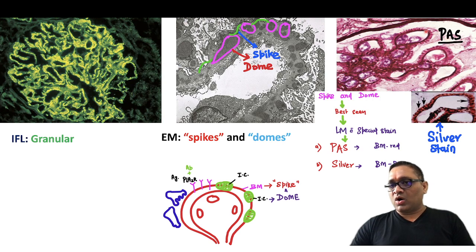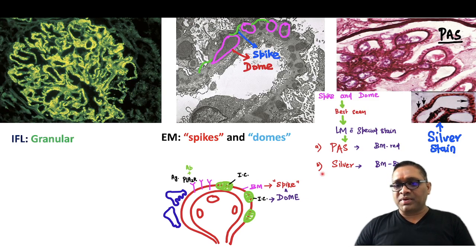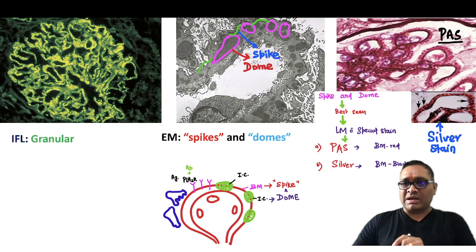So on PAS staining, you can see all the red color things are the basement membrane. So basement membrane is red in appearance. Silver staining, they are looking black in color. And you can notice that spike and dome is more clearly seen in this staining. So enjoy learning. Best.